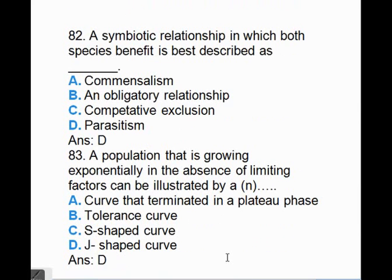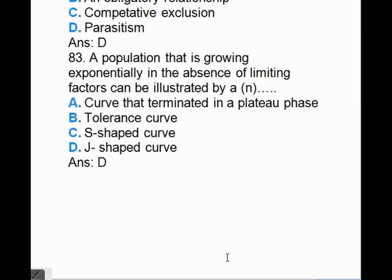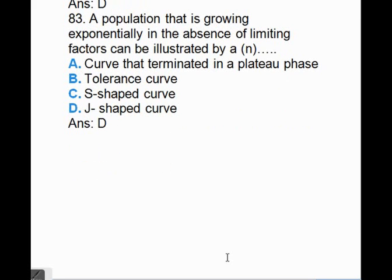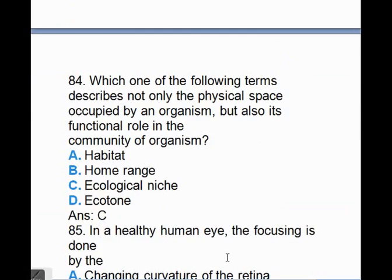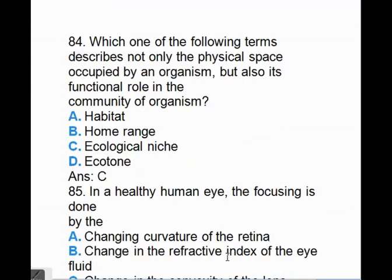A symbiotic relationship in which both species benefit is best described as parasitism. A population that is growing exponentially in the absence of limiting factors can be described by a, answer is D, J-shaped curve. The following terms describe not only the physical space occupied by an organism but also its functional role in the community of organisms. Answer is C, ecological niche.